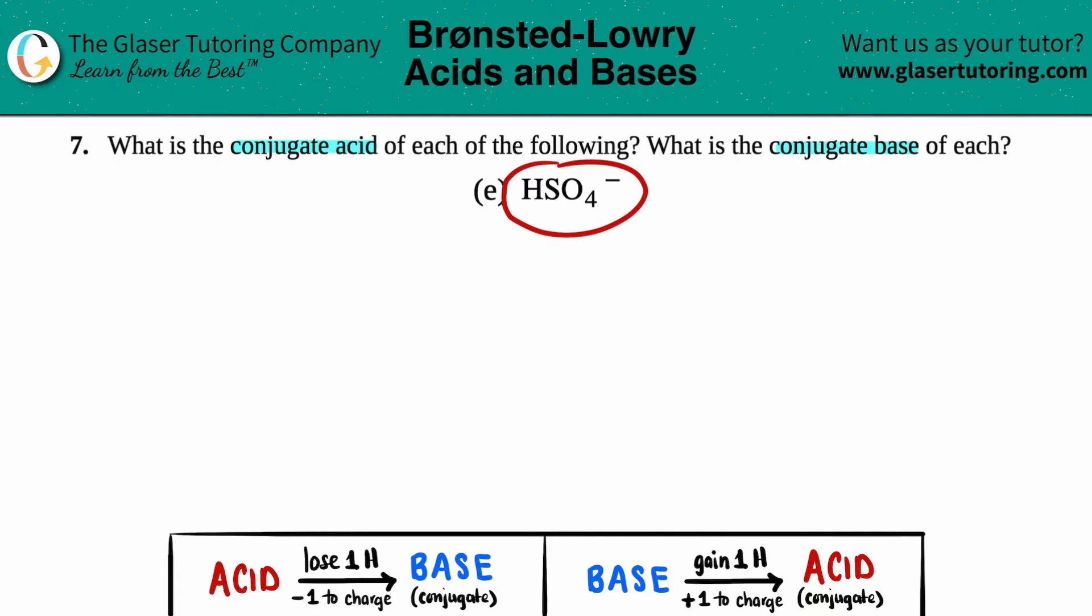So since HSO4 minus has both properties, it's got the H in the front and a minus in the back, that means it potentially can act as both. Just depends on the situation which one it's actually going to act as. But in this case, we just have to find the conjugates. So let's go for it.